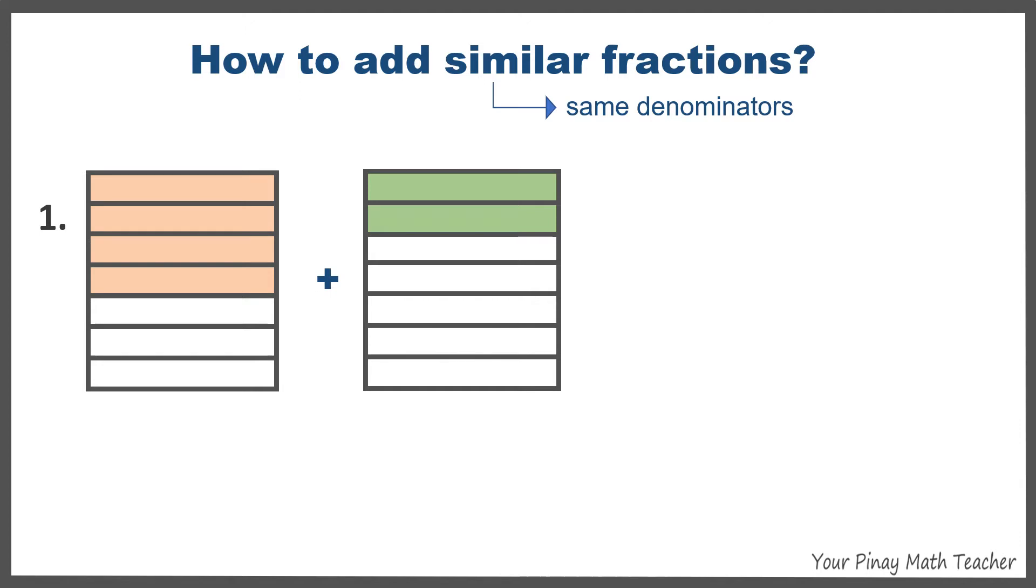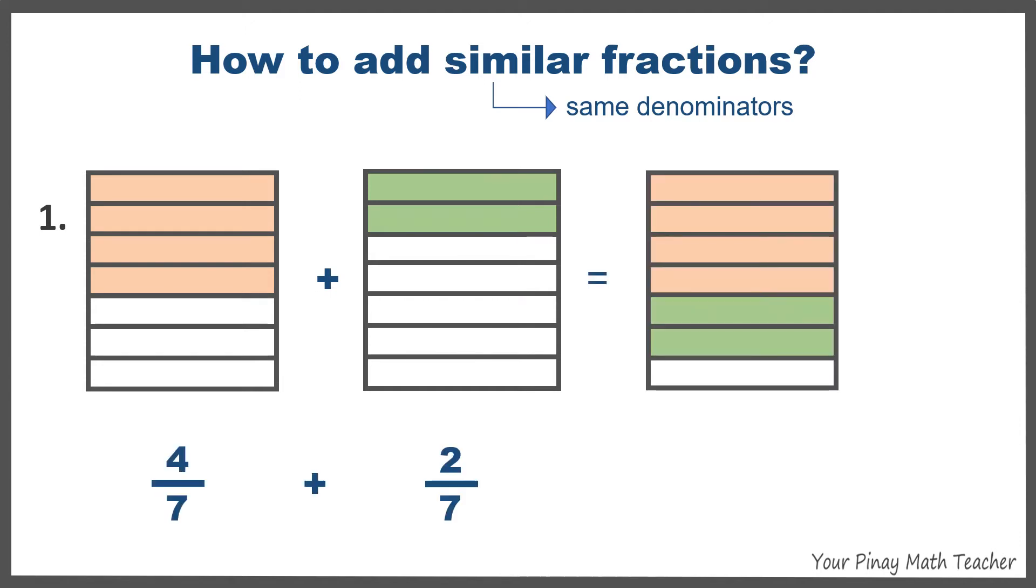Number one, 4 sevenths plus 2 sevenths is equal to 6 out of 7. Since this is a proper fraction and it is in its lowest term, then 6 sevenths is the final answer.